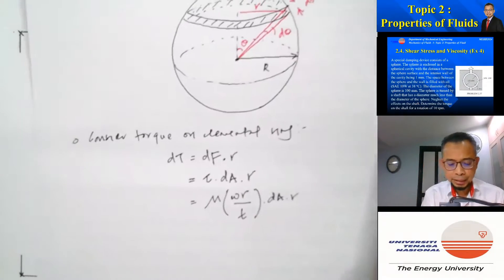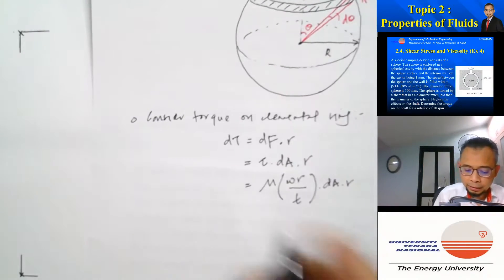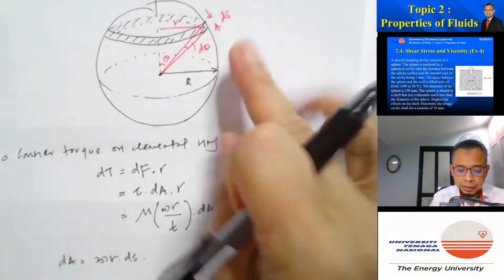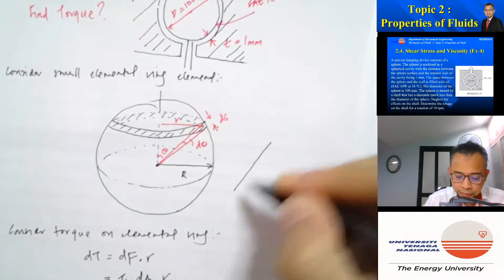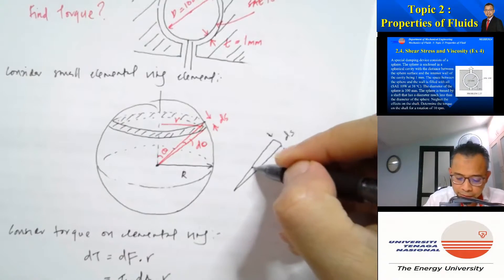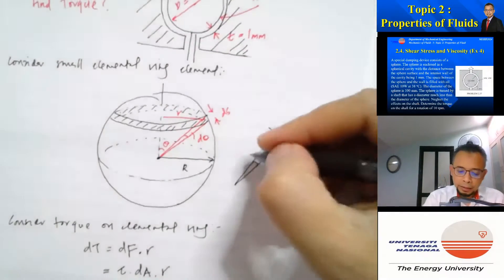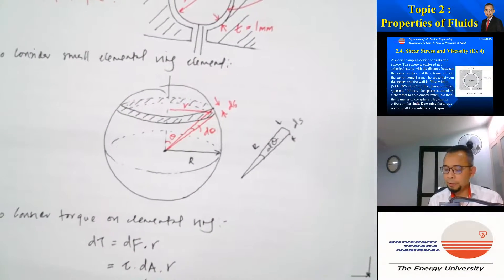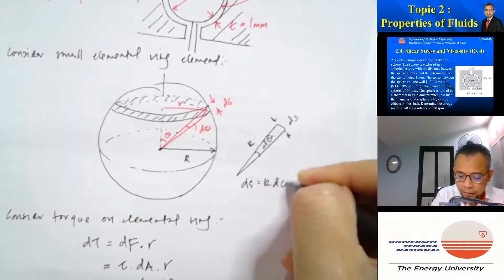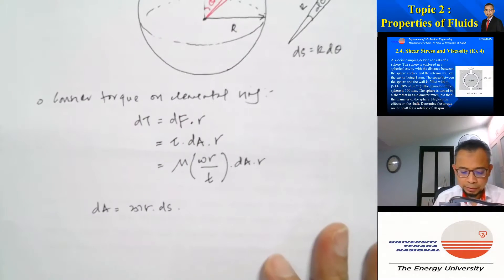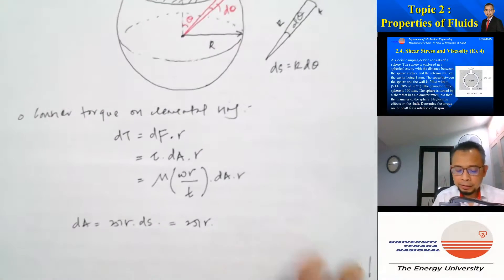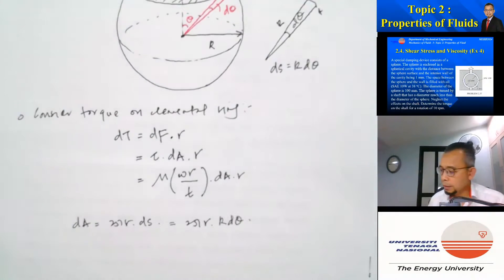Now let's consider dA. The area of the elemental ring is dA equals 2πr times ds, the circumference multiplied by the arc length. The arc length ds corresponds to the angle increment: ds equals R dθ. So we can write dA equals 2πr times R dθ.